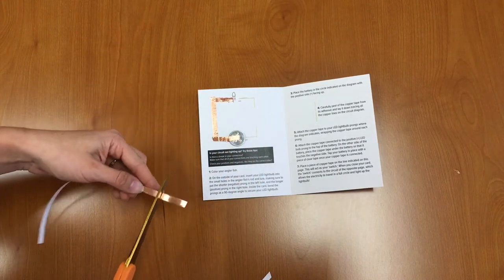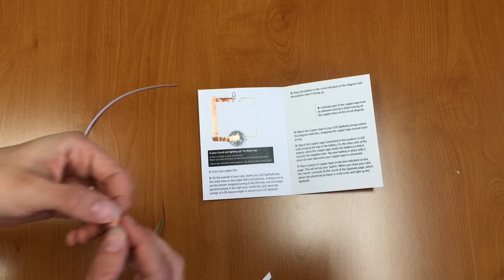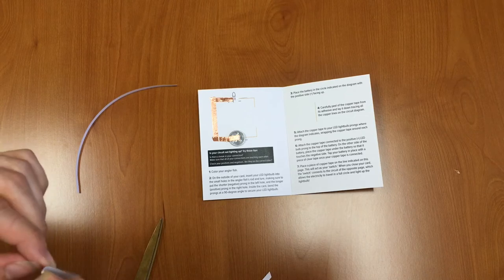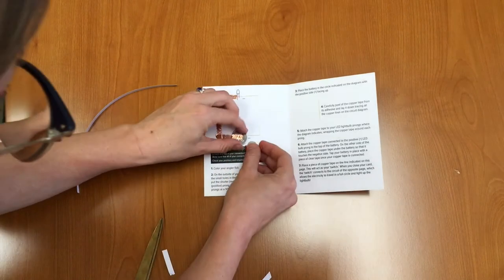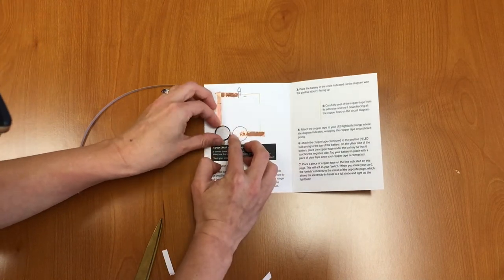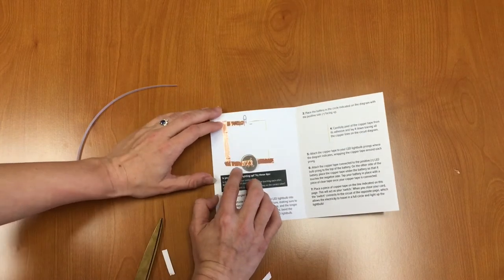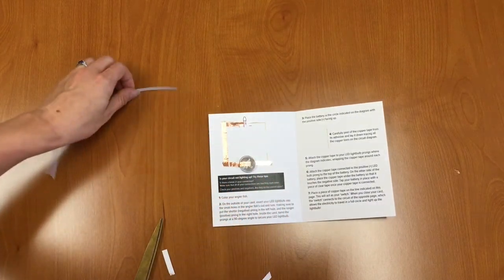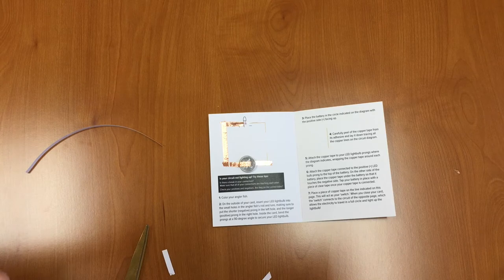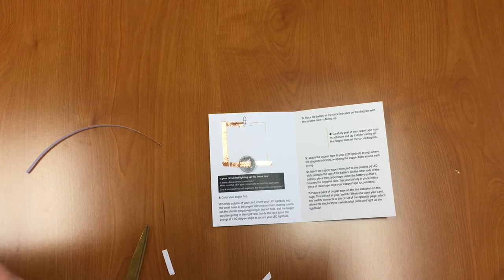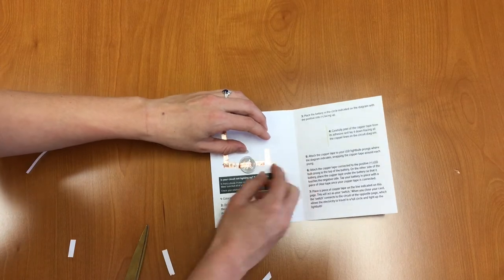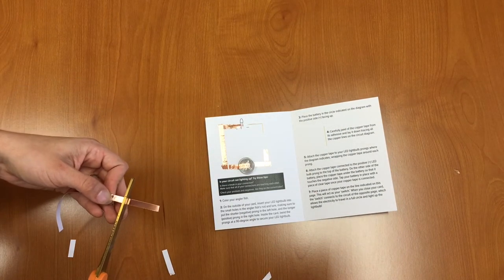On the other side, we're going to take a piece of copper tape, peel it off the back, and we're going to flip over the battery and put it underneath the battery just like that, so that the bottom part of the battery touches the copper tape. So we have it connected on the top on one side and the bottom on the other side. All right, just a few more pieces of copper tape that we need to put on.